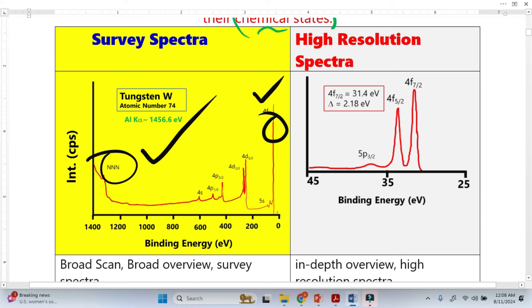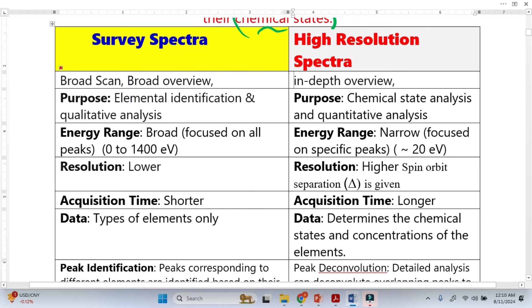The survey spectra is also called broad scan or broad overview, while high resolution is called in-depth overview. The purpose of survey spectra is basically elemental identification.